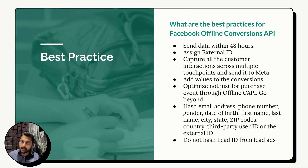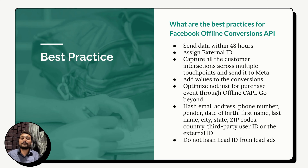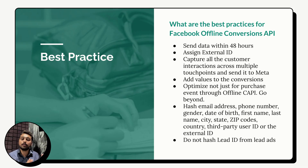Number one: send the data within 48 hours — that's the maximum. Facebook has a long attribution window, but you never know exactly when the user saw your ad online. It is better to send the data within 24 hours, and even better if it is near real-time, which is what Meta recommends. Send the offline conversion data as soon as possible.